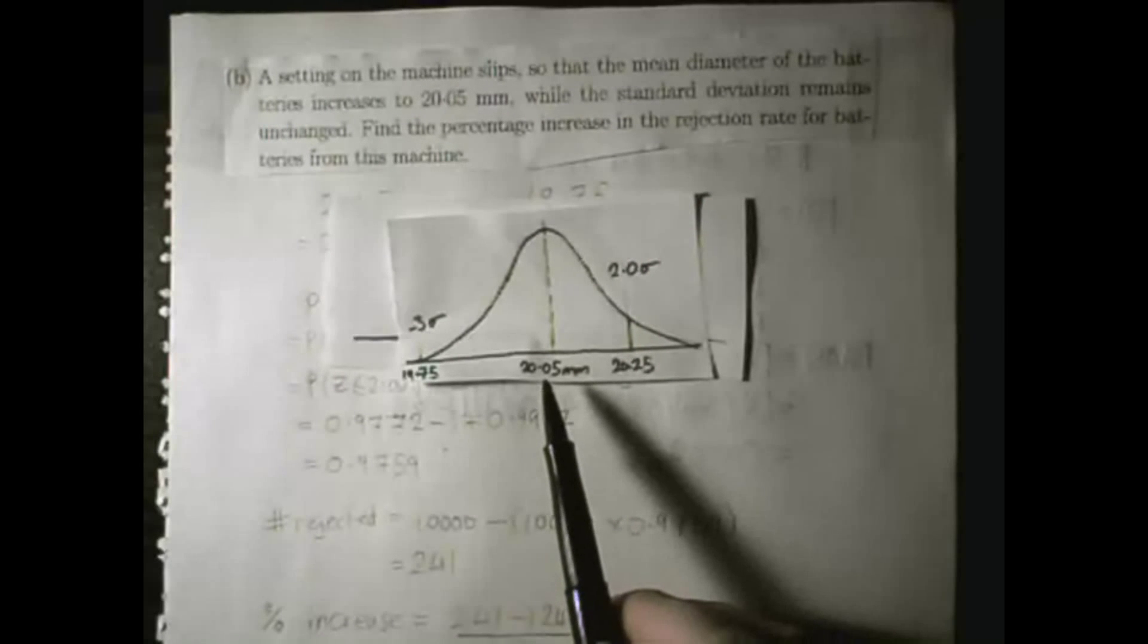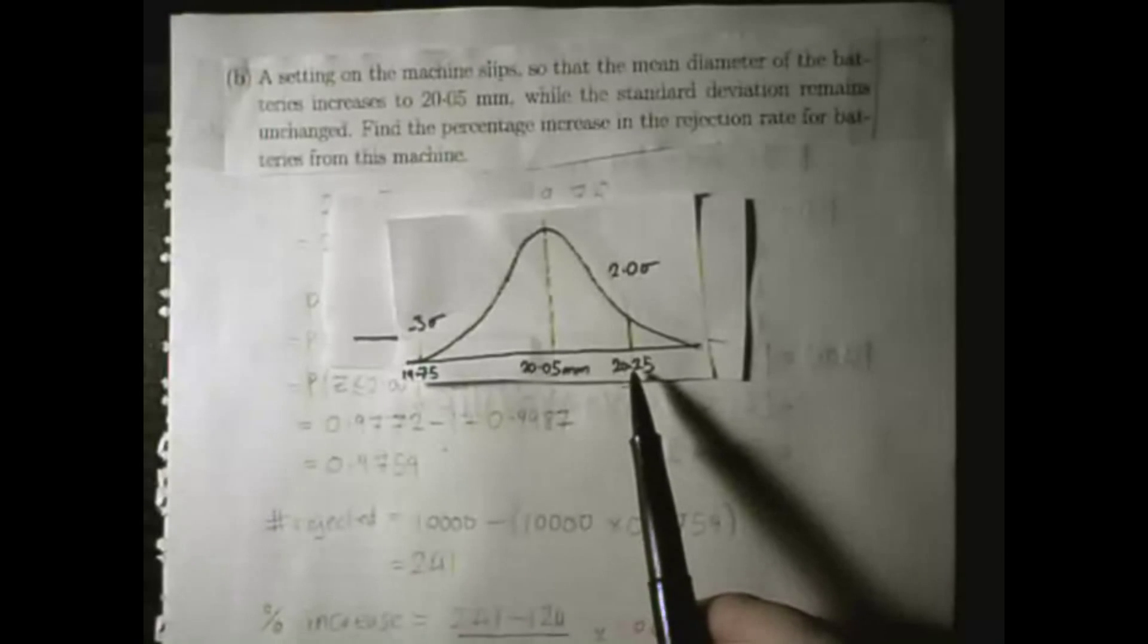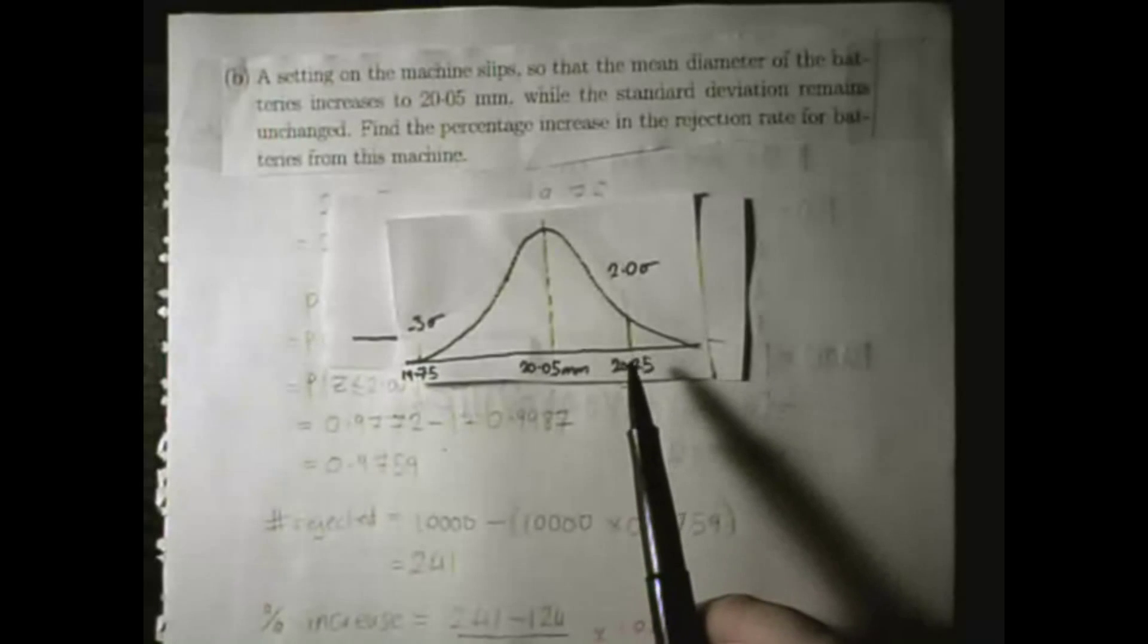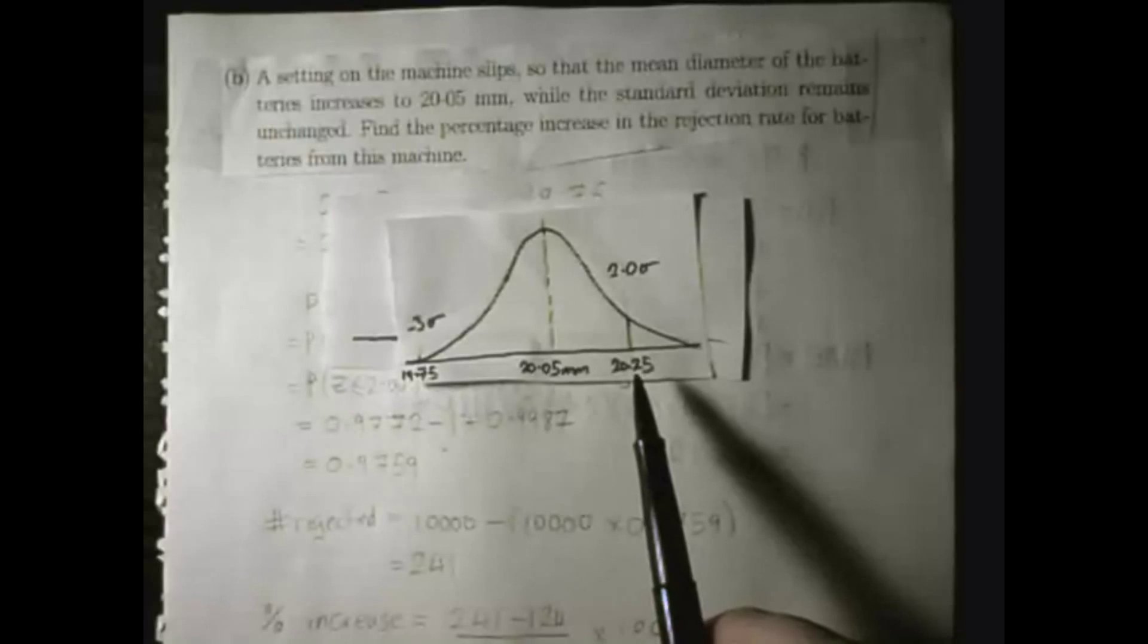Now our mean is 20.05. Now 20.25 is only 2 standard deviations away. Remember the standard deviation is 0.1mm, so 2 standard deviations away is 0.2mm.